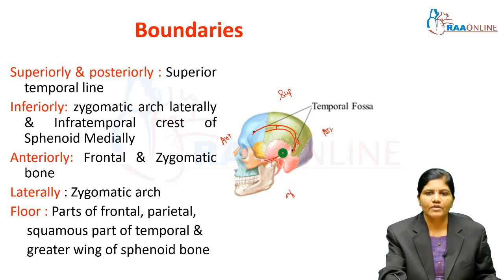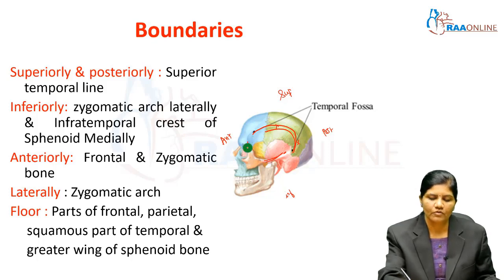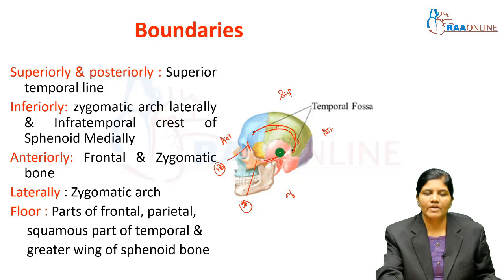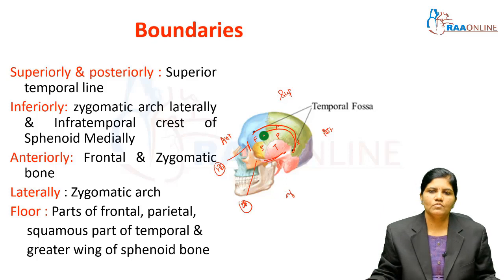Laterally, the boundary is the zygomatic arch, and medially the infratemporal crest of the sphenoid. Anteriorly, the zygomatic process of the frontal bone and the frontal process of the zygomatic bone forms the anterior limit. The floor is formed by the frontal bone, parietal bone, squamous part of temporal bone, and the greater wing of the sphenoid.